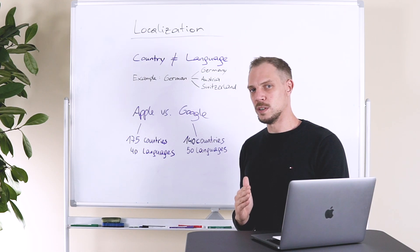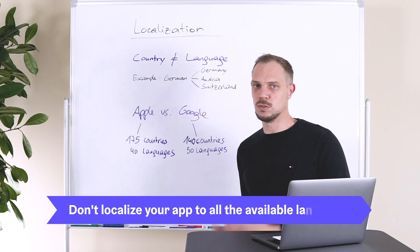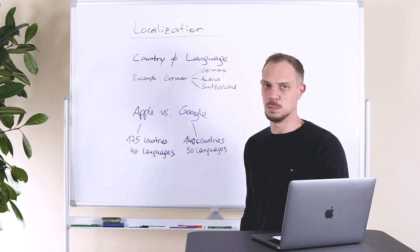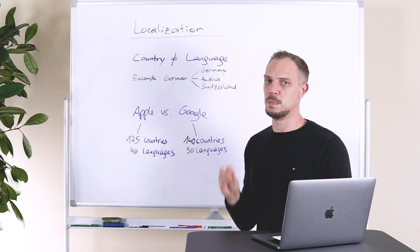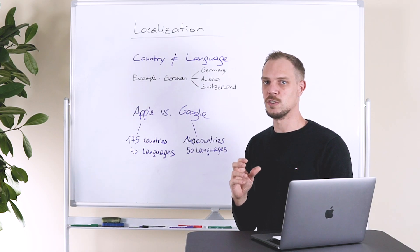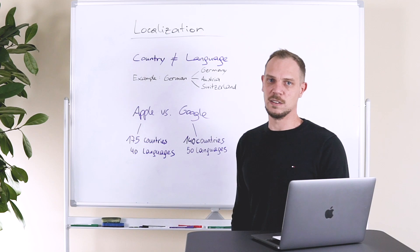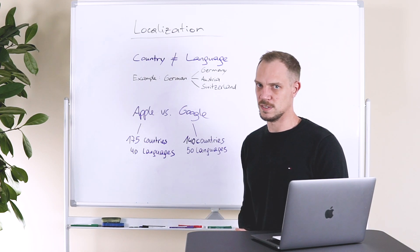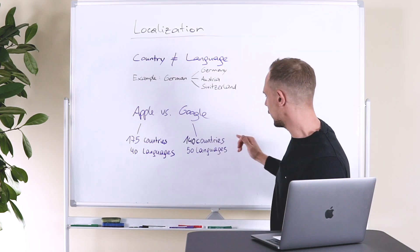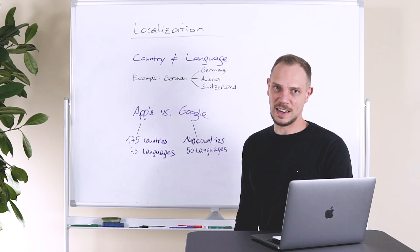It is really important to define which languages to prioritize first. Don't try to localize into every supported language — ask yourself where you have the biggest impact, and start by localizing into languages spoken in markets where you already have traction and downloads. For the Google Play Store, it is supported in 140 countries and you can localize into 50 languages distributed across those countries.